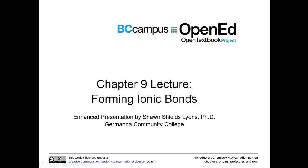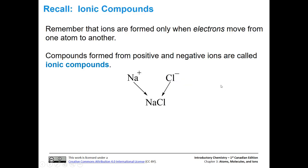Forming Ionic Bonds. Let's remind ourselves of a few things about ionic compounds. Ions are formed when electrons actually move from one atom to another — one atom loses electrons, another gains electrons. The atoms that lost electrons are called cations, and atoms that gained electrons are called anions. These form ionic compounds.